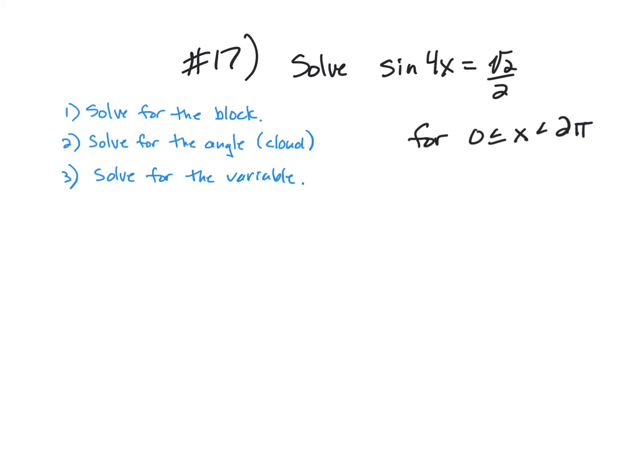Okay, here's day one, number 17. The sine of 4x equals radical 2 over 2, where x is between 0 and 2π, which means I need all the answers one time around the circle.